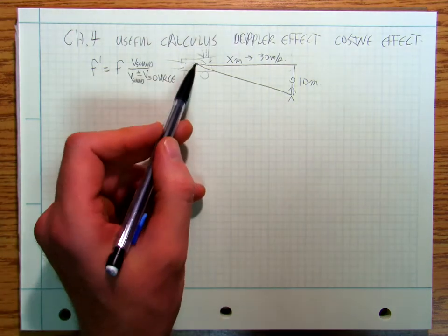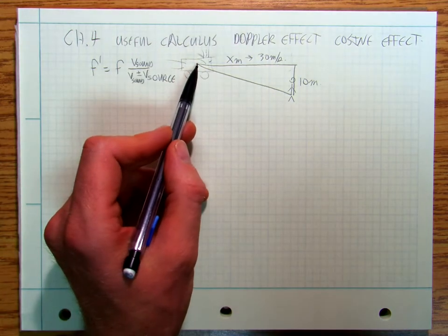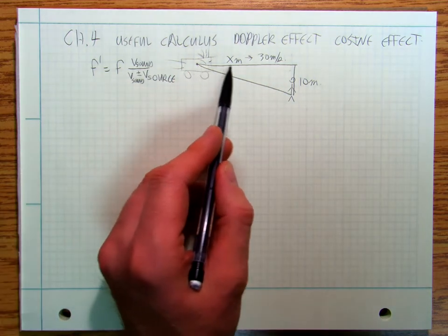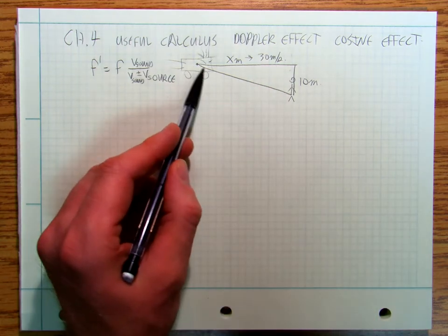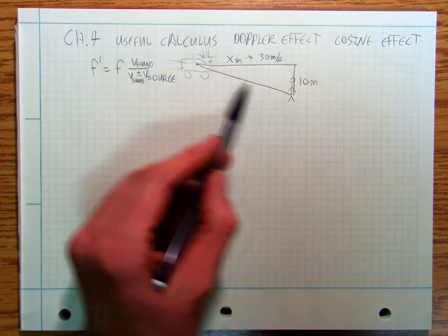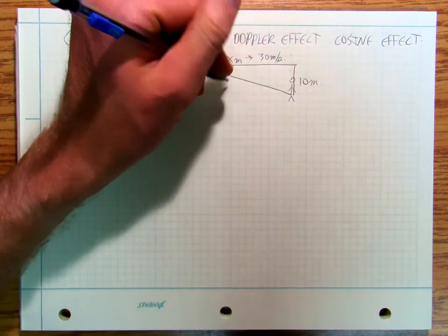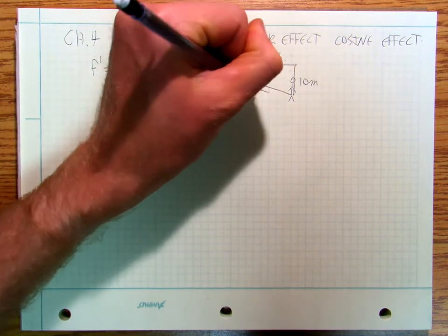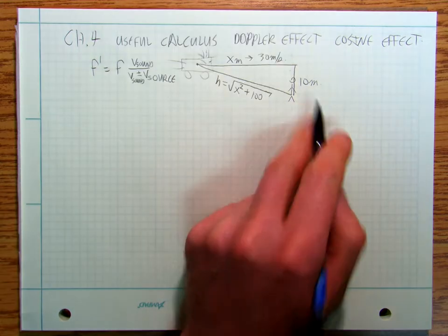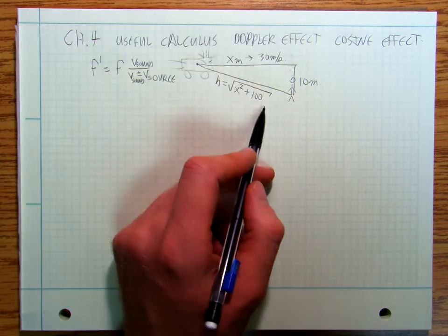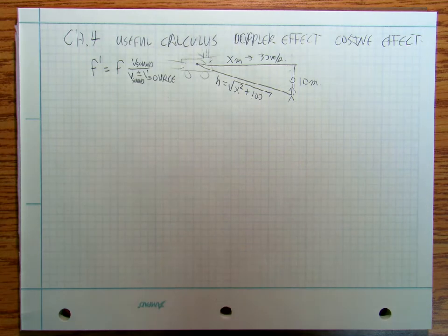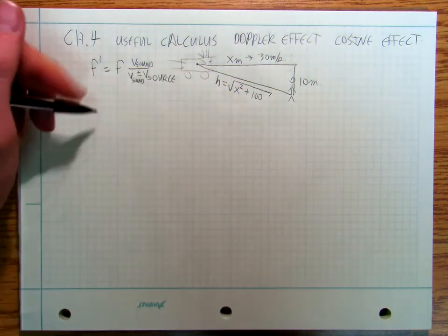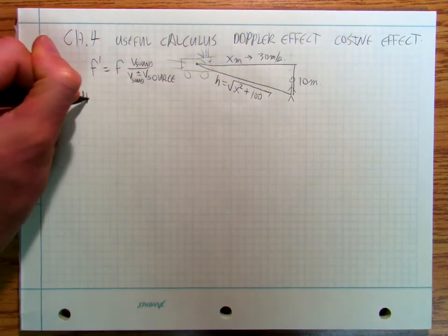As it gets closer and closer to you, what determines the Doppler effect is not how fast it's going down the road — it matters how fast this distance is shrinking. This distance, which we'll call h, is going to be by the Pythagorean theorem: x squared plus 100, because that's 10 squared, a squared plus b squared equals c squared. You don't care how fast they're going down the road; you care what is dh/dt.